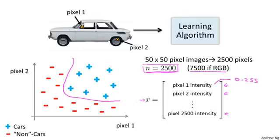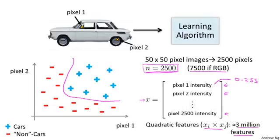So if we were to try to learn a non-linear hypothesis by including all the quadratic features, that is, all the terms of the form xi times xj, well, with 2,500 pixels, we will end up with a total of 3 million features. And that's just too large to be reasonable. It will be computationally very expensive to find and to represent all of these 3 million features per training example. So simple logistic regression, together with adding in maybe the quadratic or the cubic features, that's just not a good way to learn complex non-linear hypotheses when n is large, because you just end up with too many features.